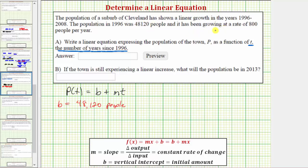And then because the population is growing at a rate of 800 people per year, m, the slope, which is the constant rate of change, is equal to 800 people per year.